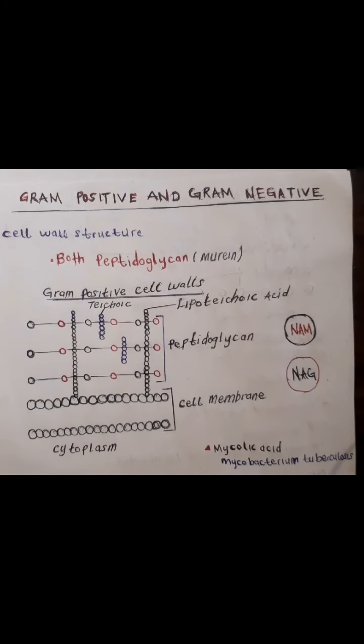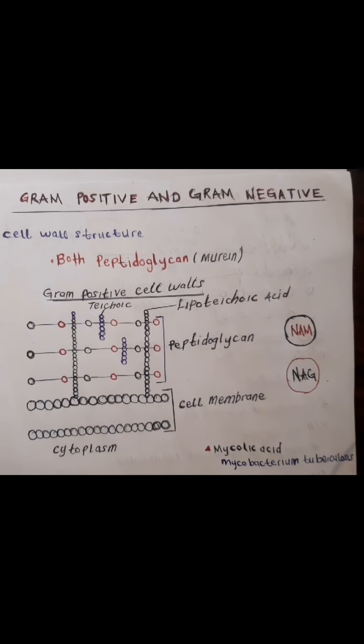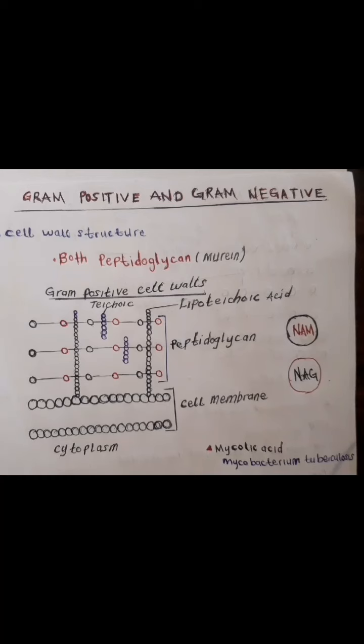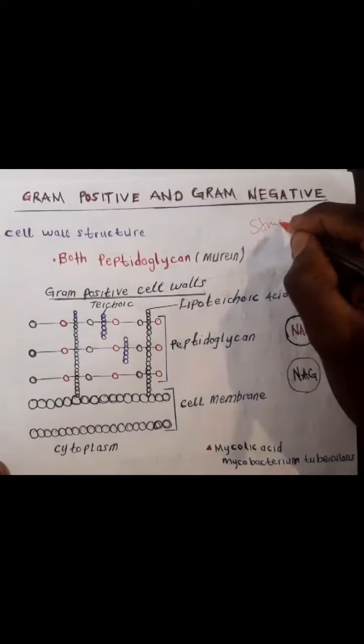Welcome, friends, to another video tutorial. Today we are going to consider gram-positive and gram-negative bacteria. Both types of bacteria have a cell wall, but they are classified as gram-positive or gram-negative based on the structure of that cell wall.